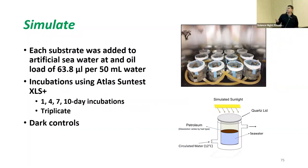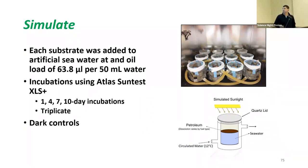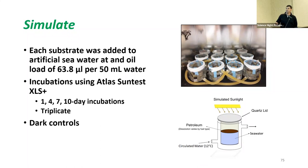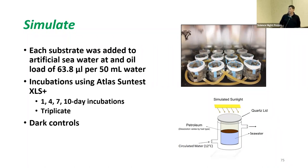We set up bench-scale microcosm experiments in the lab using jacketed beakers to control temperature equivalent to what we expect in Alaska. We covered them with quartz lids to mitigate evaporation but let the solar spectrum through. We added a prescribed amount of oil to 50 milliliters of water and did these incubations in different increments, in triplicate with dark controls, mimicking the solar spectrum expected in Alaska versus previous studies done in the Gulf of Mexico.